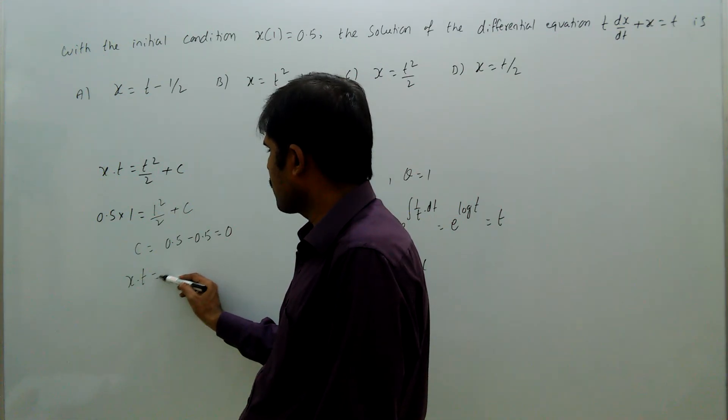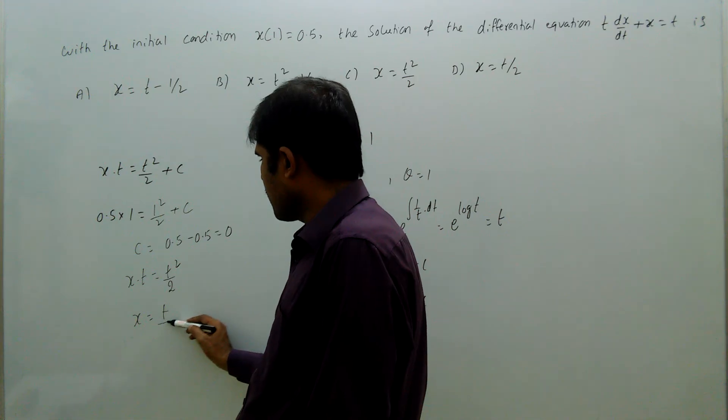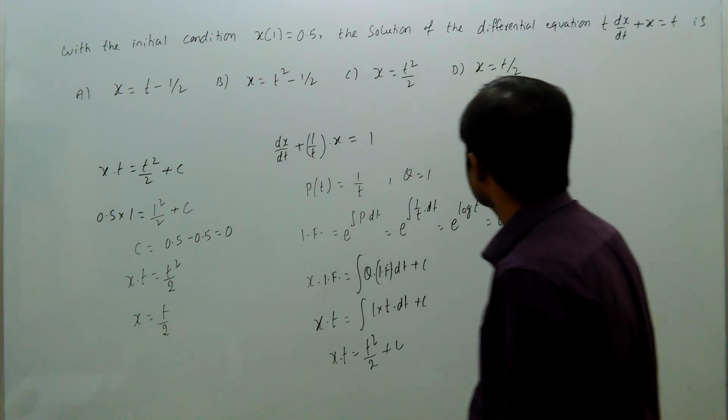Therefore, x into t equal to t square by 2, or x equal to t by 2. X equal to t by 2 is the solution.